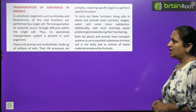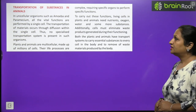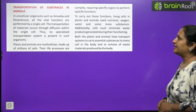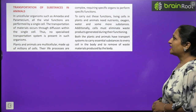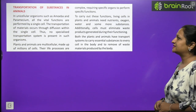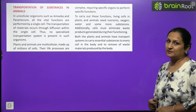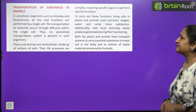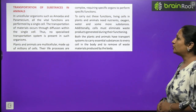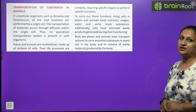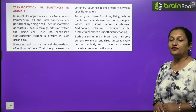Plants and animals are multicellular, made up of millions of cells. Life processes are complex, requiring specific organs to perform specific functions. Living cells need nutrients, oxygen, water, and other substances. Additionally, cells must eliminate waste products generated during these functions. So both plants and animals have a transportation system for the transport of different materials.